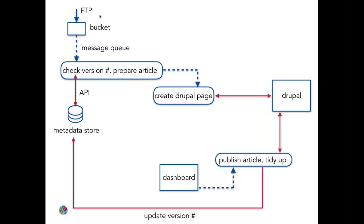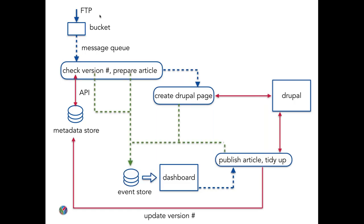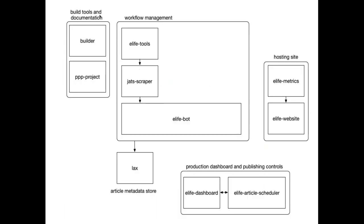How does the dashboard know what's going on? Inside each of these workflows, every single individual activity can emit information about what it has done and the status of its activity. We push those events into an event store via these queues, and the dashboard is just reading directly out of that event store. The system is quite nicely decoupled — we could reconfigure it to introduce new workflows, extend the workflows to introduce new activities, and events could be pushed into that event store from further upstream or downstream in the process.